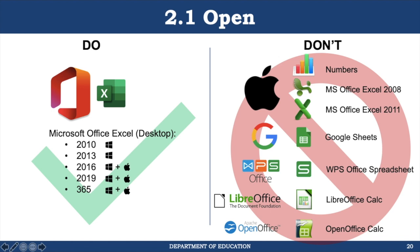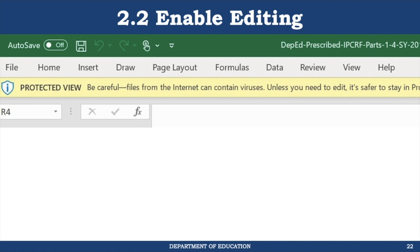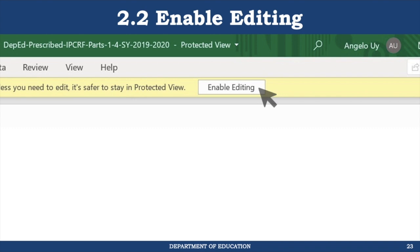Note that if you open the IPCRF tool with any of the apps in the don't column — in other words, not Excel — the tool is forever broken and you need to download a new copy. It's important that you emphasize this when cascading to the field. There were cases reported where macros don't work because they were not using Microsoft Excel. When the tool is opened, Excel automatically puts the file in protected view for security reasons. Notice the yellow bar that says protected view below the ribbon. You need to click the enable editing button so you can begin editing the file; otherwise, it will remain disabled. On the Mac, Excel will meet you with a dialog box asking whether to enable or disable editing. Just click enable editing.